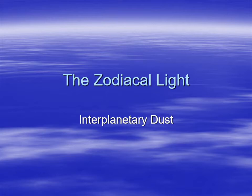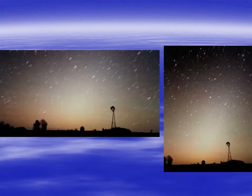Sometimes these dust grains are left over actually from the material that started it all. So there's dust out there — you've got the solar system, you've got the sun, and you've got a big disk of dust around it. Now that's actually visible. Believe it or not, you can see this. There's something called the zodiacal light.